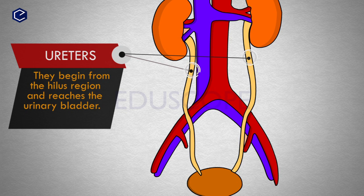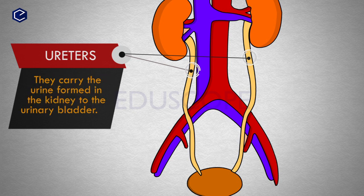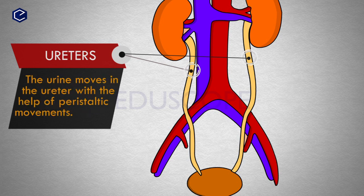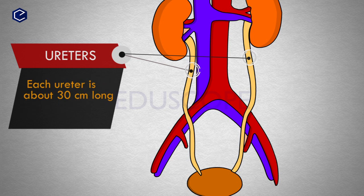The ureters begin from the hilum region and reach the urinary bladder. They carry the urine formed in the kidney to the urinary bladder. Urine moves through the ureter with the help of peristaltic movements. Each ureter is about 30 centimeters long.